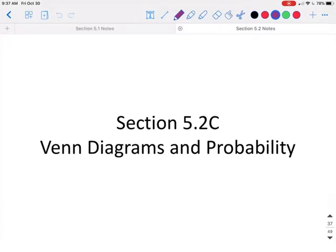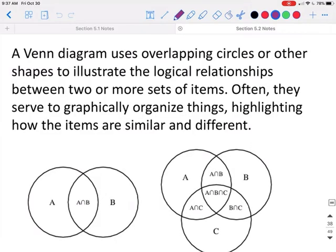This is section 5.2 part C, Venn Diagrams and Probability. A Venn diagram uses overlapping circles or other shapes to illustrate the logical relationships between two or more sets of items.